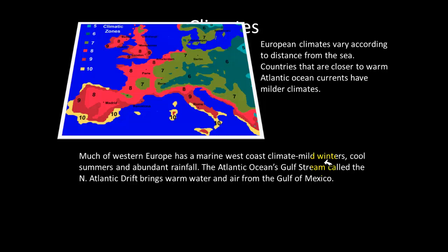Much of western Europe has a marine coast climate, which means mild winters, cool summers, and abundant rainfall. The Atlantic Ocean's Gulf Stream — called the North Atlantic Drift — brings warm water and air from the Gulf of Mexico. Let me stop here and go over something quickly.